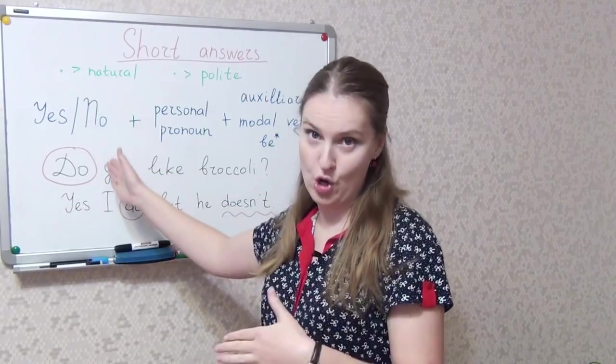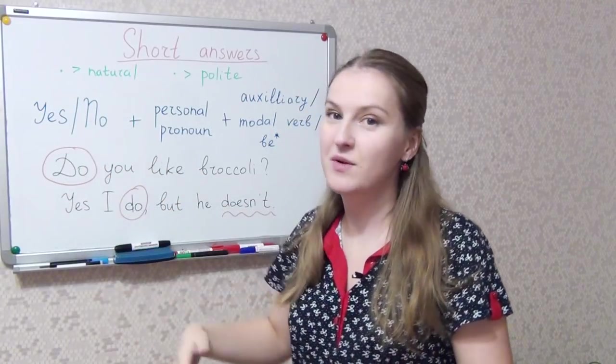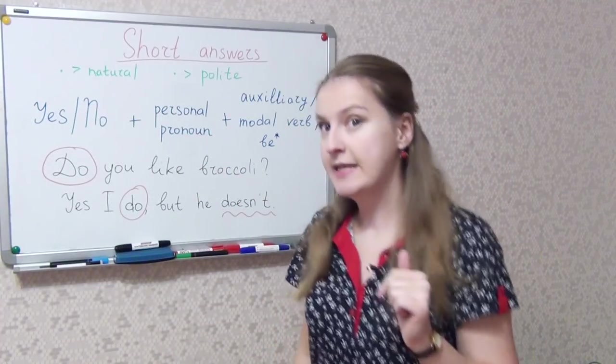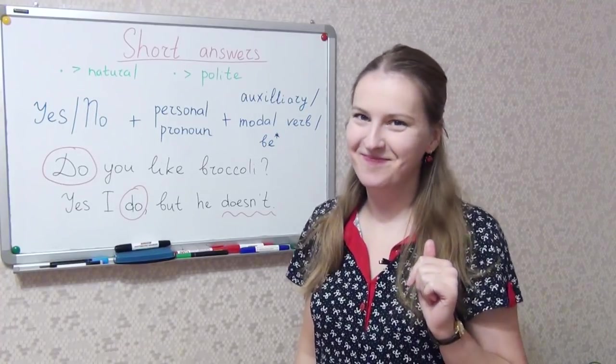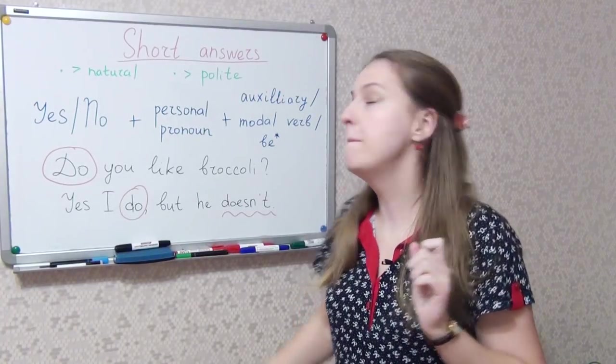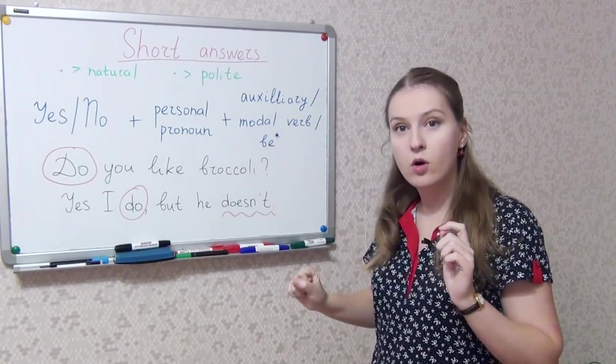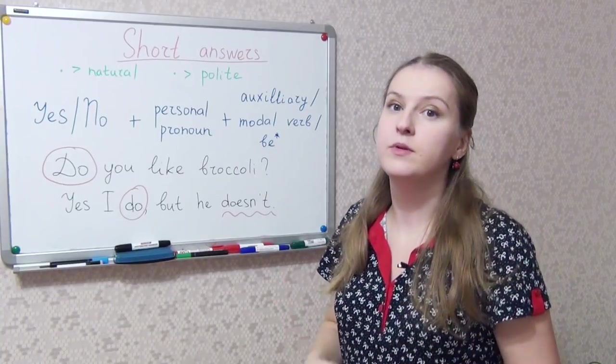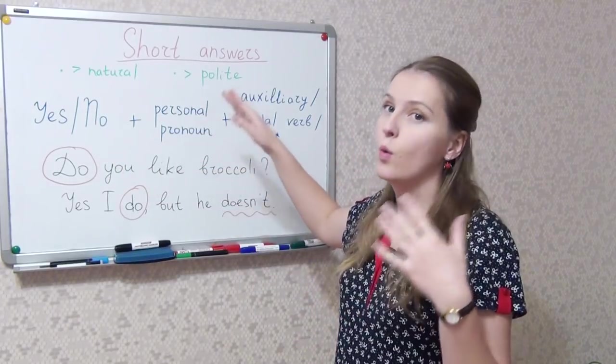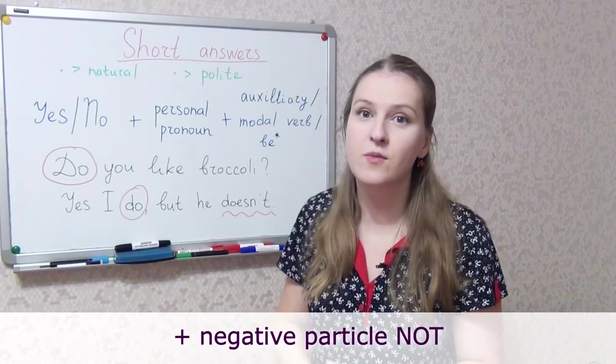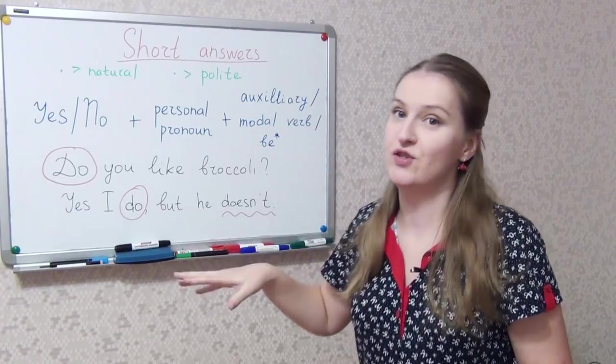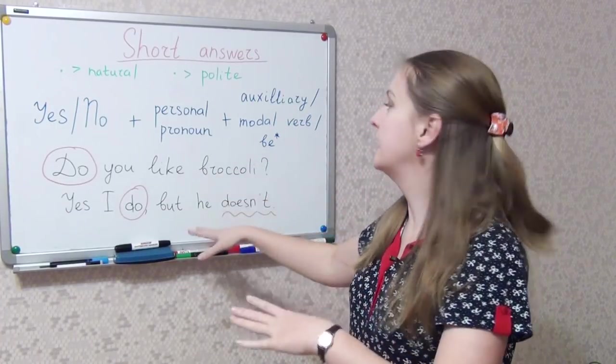We say yes or no, choose the correct variant, whether you agree or disagree. Then you use a personal pronoun: I, you, he, she, it, we, they. And after that we use an auxiliary verb or a modal verb or some form of the verb to be. By the way, if you say no here, after the auxiliary verb or a modal verb or some form of the verb to be, you need to use a negative particle not. This part depends on the question a lot.